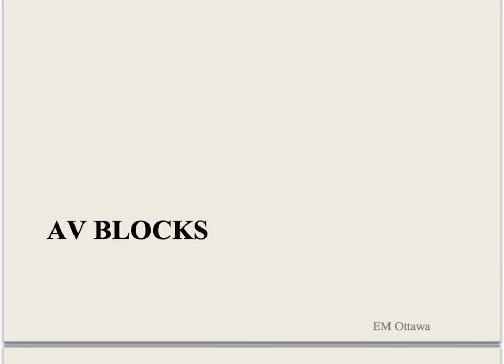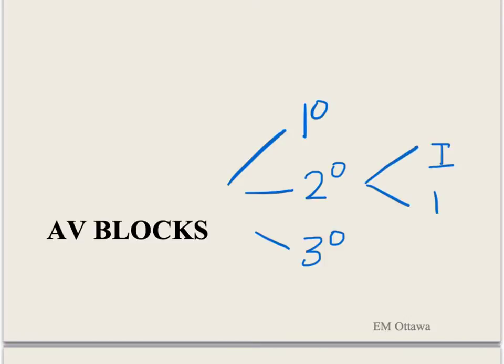The next rhythms are about AV blocks. These happen because there is a blockage of the impulses somewhere in the AV node. There are three types of AV blocks: first, second, and third degree. Second degree AV blocks are further divided into type 1 and type 2.